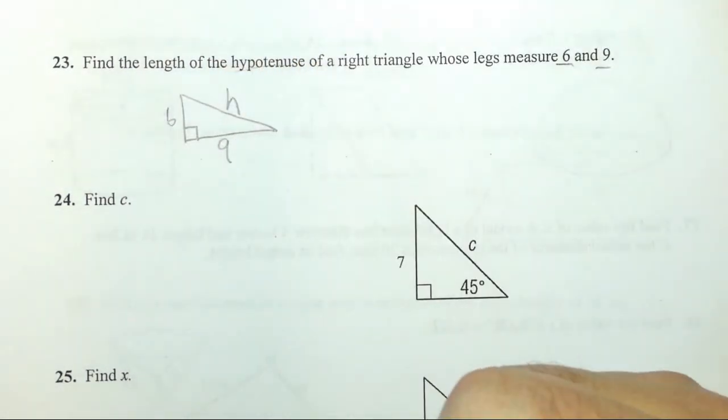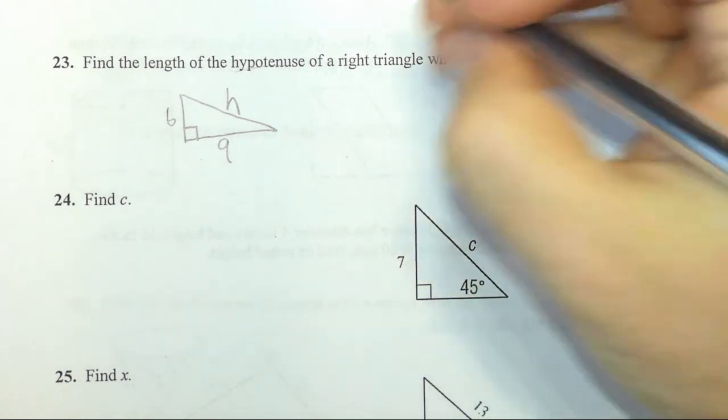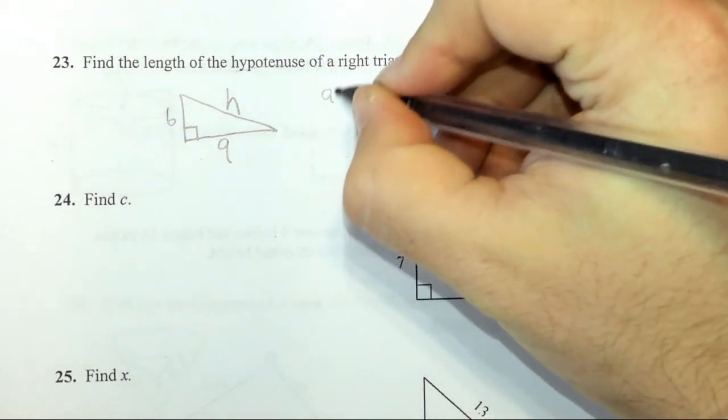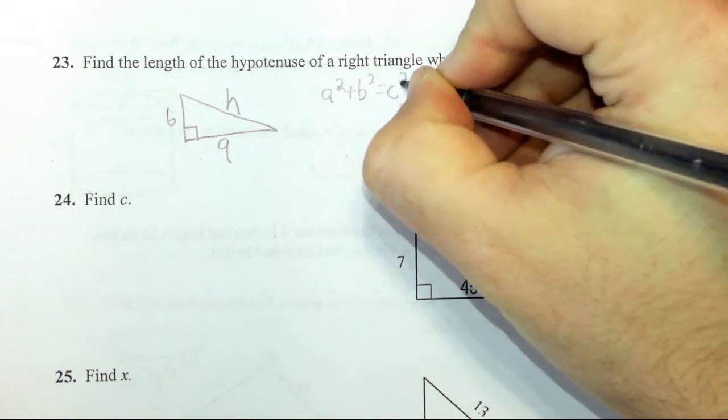And the way I find the third leg of a right triangle is using Pythagorean theorem. A squared plus B squared equals C squared.